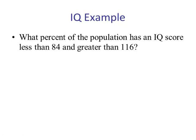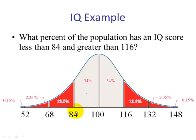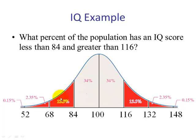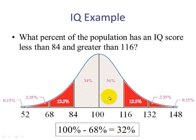What percent of the population has an IQ score less than 84 or greater than 116? From the previous example, we know that between 84 and 116 is 68%. We want less than 84 and greater than 116 — the two tails. The left tail, middle, and right tail add up to 100%. So we take 100% minus 68% and get 32%.